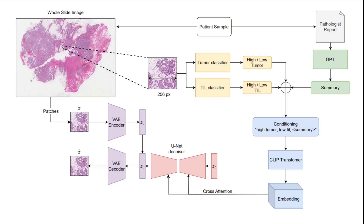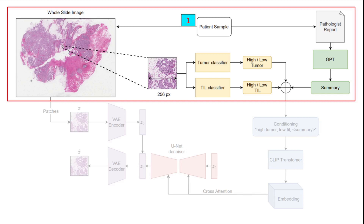Here is an overview of our method. We first start with a whole slide image and an accompanying pathologist text report. Leveraging GPT, we summarize the slide-level pathologist report into a concise summary. We crop the whole slide image into non-overlapping patches of 256 by 256 pixels. Since the slide-level report describes features observed across the whole slide image that may not be visible in each individual patch, we use pre-trained classifiers to compute the presence of tumor and tumor-infiltrating lymphocytes for each patch and fuse them with the slide-level summary, creating enhanced captions.